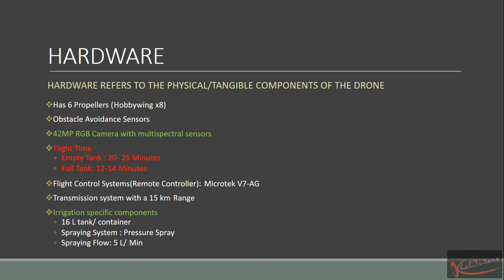The remote control system is not directly a part of the drone, but it is one of the components needed to actually control it. My drone uses the Microtech V7. You don't really have to know the model — you just have to mention that it is a remote controller and state its features, like its range. The transmission system in the drone can communicate with the remote controller up to a distance of 15 kilometers. So there is communication between the remote controller and the drone even at a distance of about 15 kilometers.